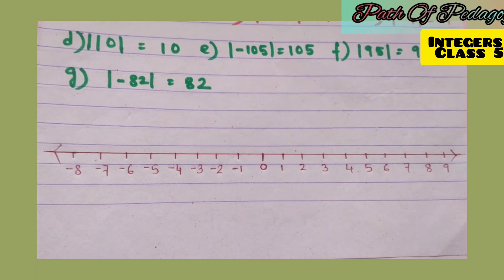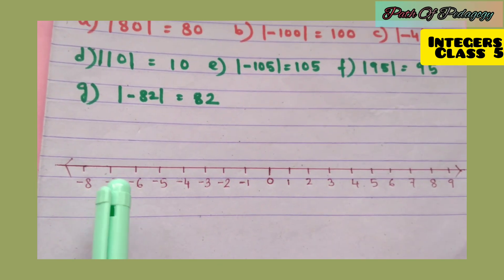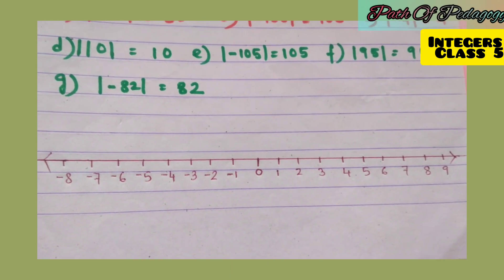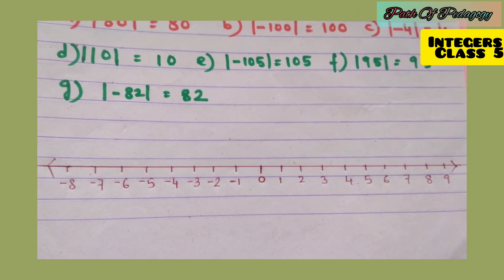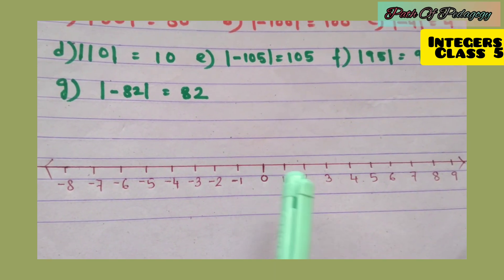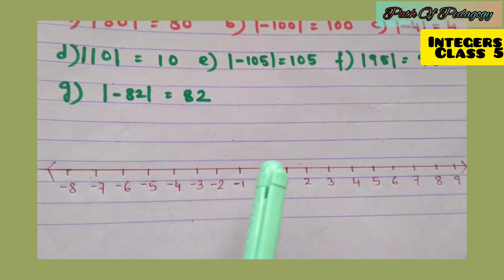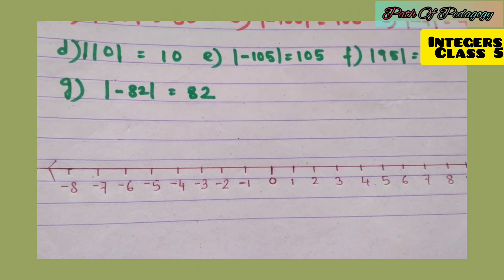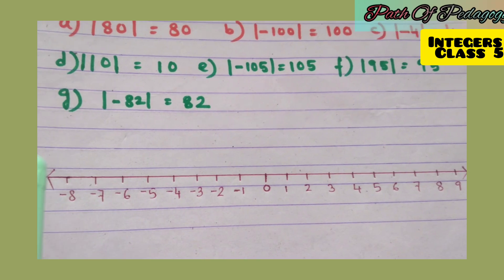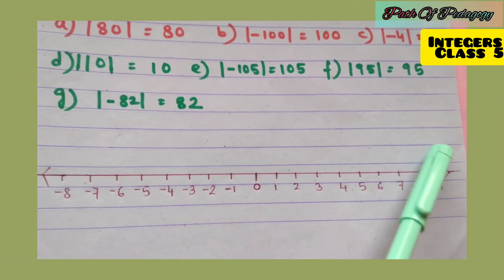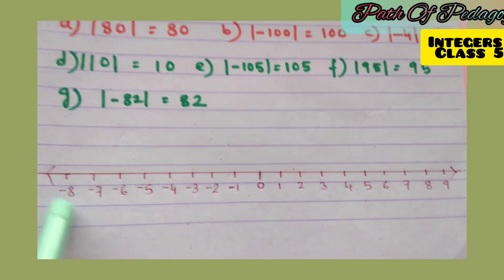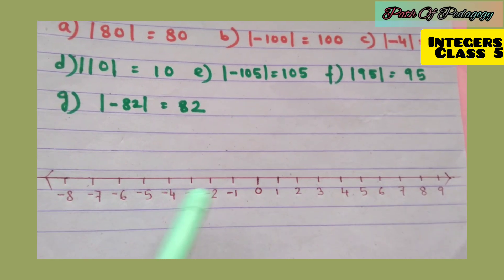Let us understand absolute value with the help of the number line. At the center of the number line there is 0. On the right-hand side of 0 are the positive integers, and on the left-hand side are the negative integers, marked with a minus sign. Arrows on both sides show that the numbers are endless in both directions.